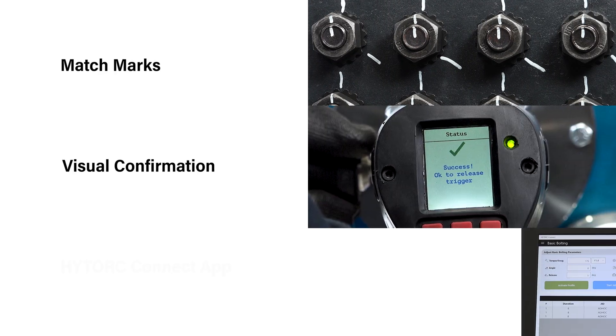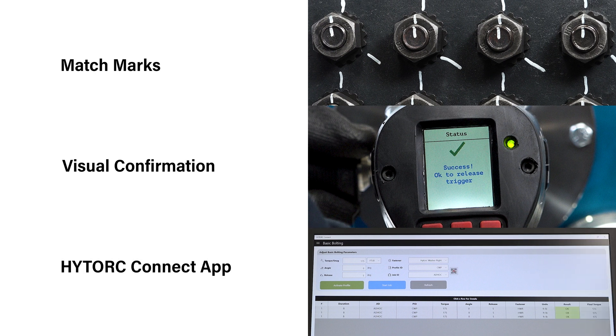Quality control verification of the installation is performed visually in real time. Use of match marks aids after-the-fact visual confirmation, and the high-torque Connect app can be used for data collection and creation of a permanent record.